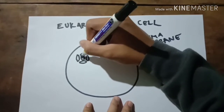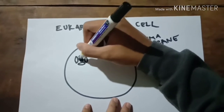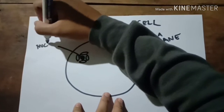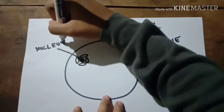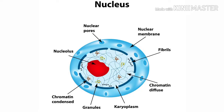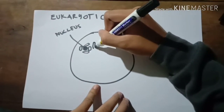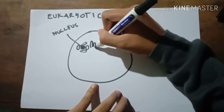This is the nucleus of the cell. The main function of the cell nucleus is to control gene expression and mediate the replication of DNA during the cell cycle.